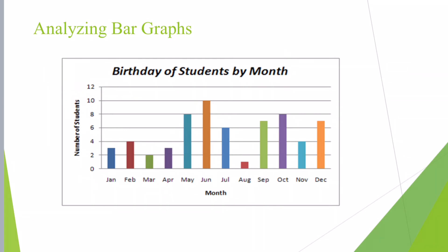Now, how can we write an analysis for this? As the steps say, we start with the title: the bar graph shows the birthday of students by month. Step number two, we show the variables. The variables of this bar graph are the months given on the X axis, and the Y axis calculating the number of students celebrating their birthdays for each month. Then we compare and contrast: the highest number of students celebrating their birthdays is in June and October respectively. However, the lowest are in August and March, as we can see from the bar graph.